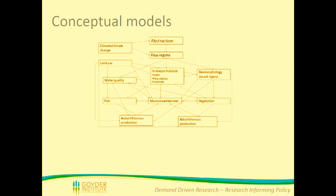This has on-flow effects — it impacts water quality, in-stream habitats, geomorphology, and also fish, macroinvertebrates and vegetation. This project looked more broadly at fish, macroinvertebrates and vegetation, but today I'll be focusing on macroinvertebrates and the hydroecological models that we created using those data.